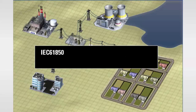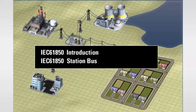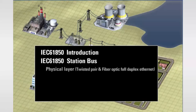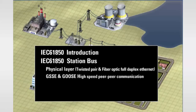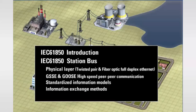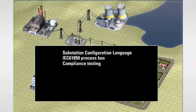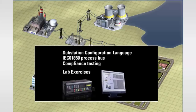After a brief introduction to the IEC 61850 protocol standard, we'll focus our attention on the IEC 61850 station bus portion of the protocol. This will include the station bus's physical layer, both twisted pair and fiber optic full duplex Ethernet, the GSSE and GOOSE high-speed peer-to-peer communication services, the standardized information models, the information exchange methods, and the client server services. The course will also touch on the substation configuration language, the IEC 61850 process bus, and compliance testing. These sections will include lab exercises to assist in better understanding GE Multilin Universal Relay and EnerVista Viewpoint Monitoring's implementation of the IEC 61850 protocol.